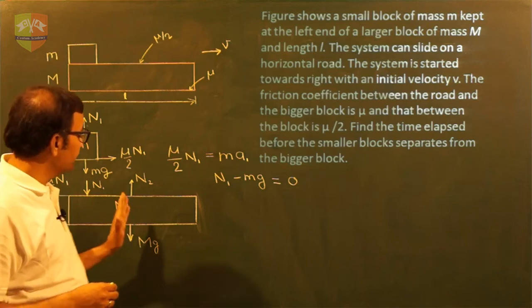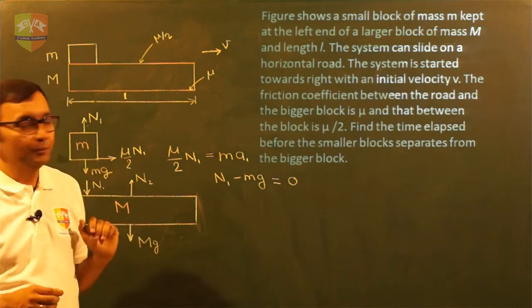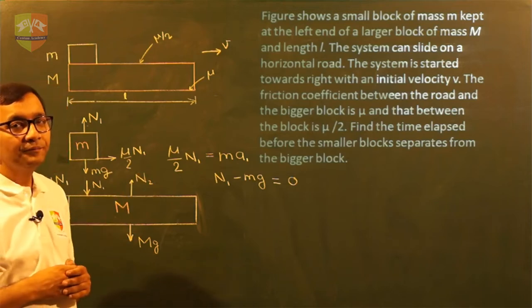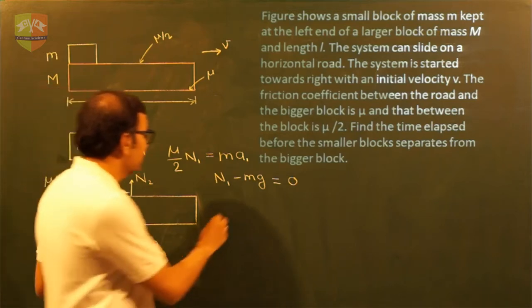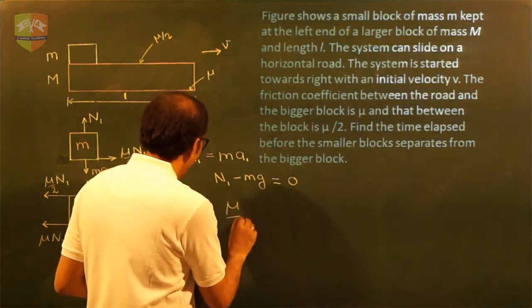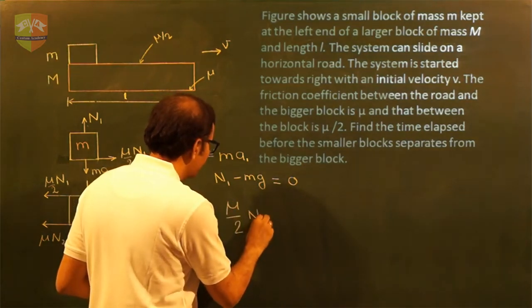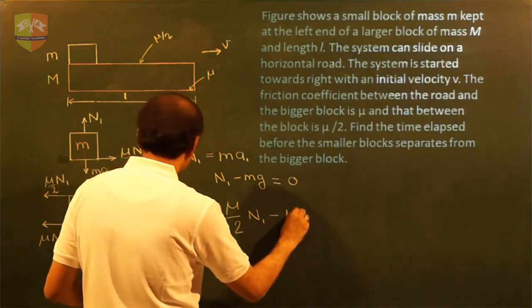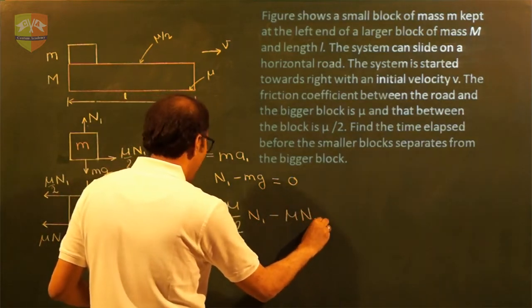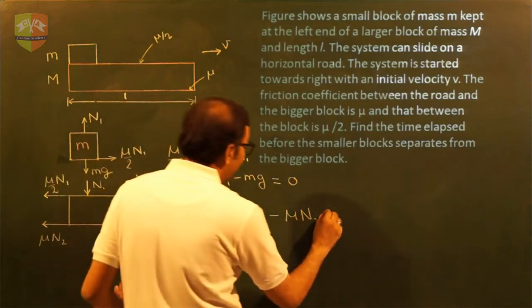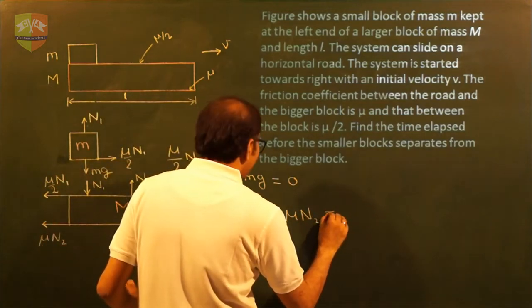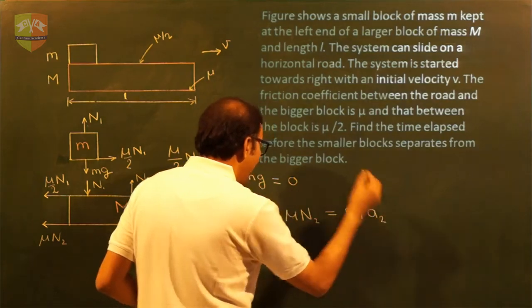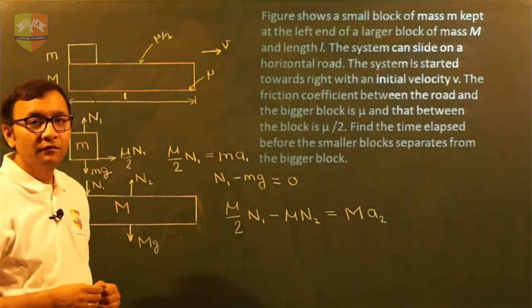Now let us write down equation for capital M also. Along the horizontal direction, what are forces you see? There is mu by 2 N1 force backward direction minus mu times N2 force. This will be equal to mass times acceleration of capital M.